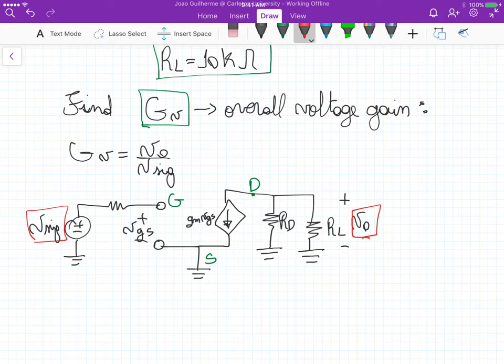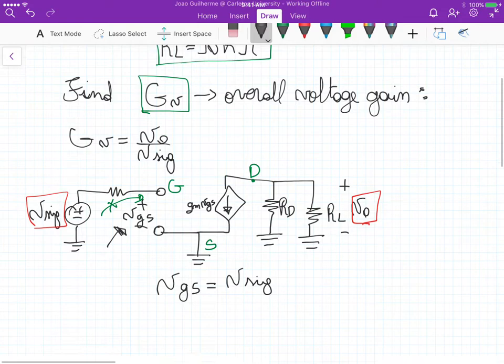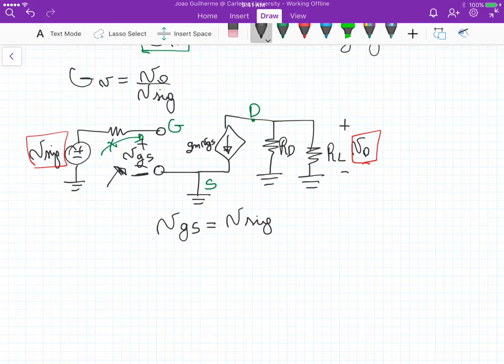So if we describe the relationship, first thing is that we know that VGS here, because there is no current flowing through the gate, this current here is zero, so actually VGS is equals to this signal. So this voltage here, VGS is equals to this signal because there is no current flowing through the gate.